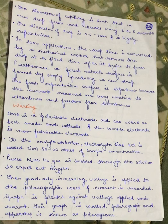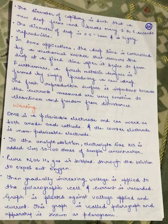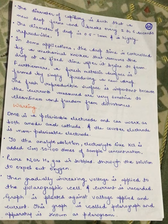The dropping mercury electrode is a polarizable electrode and can work as both anode and cathode. The counter electrode is non-polarizable. To the analyte solution, a supporting electrolyte like potassium chloride (KCl) is added — most commonly at 3200 times the sample concentration. Pure nitrogen and hydrogen gas is bubbled through the solution to expel dissolved oxygen. Gradually increasing voltage is then applied to the polarographic cell and the current is recorded.